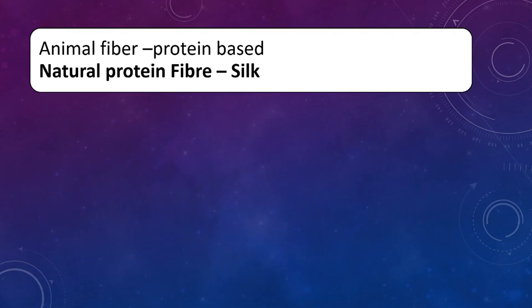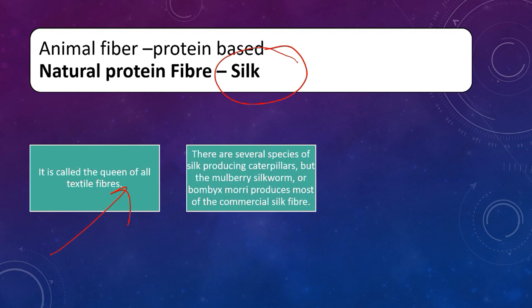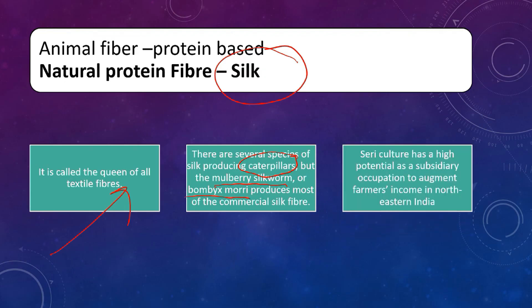The next and very important fiber is silk — an animal-based natural protein fiber. It is called the queen of all textile fibers. The source of silk: it is basically a protein-based fiber from animals. In India, there are some insects — caterpillars — that are actually producing those protein chains for the formation of silk. The names of these caterpillars include mulberry silkworm, Bombyx mori. These are the commercially produced silk fibers. There is a definite industry regarding silk called sericulture. Many people are cultivating these caterpillars for the formation of silk, and this complete industry is called sericulture.